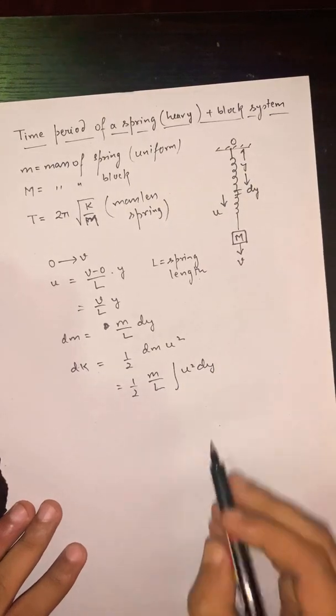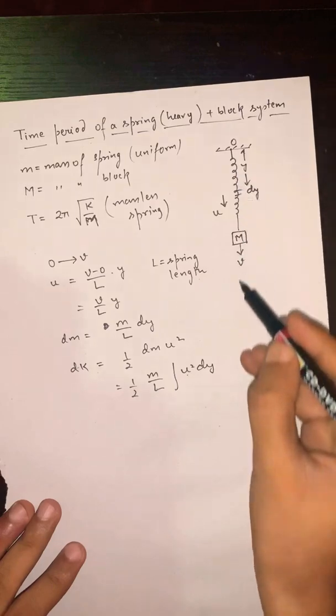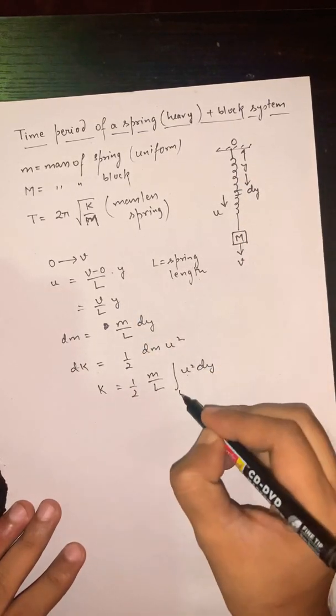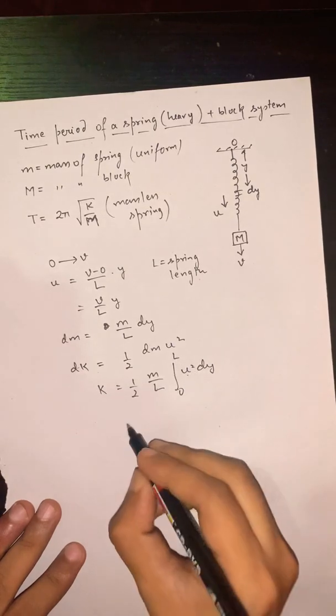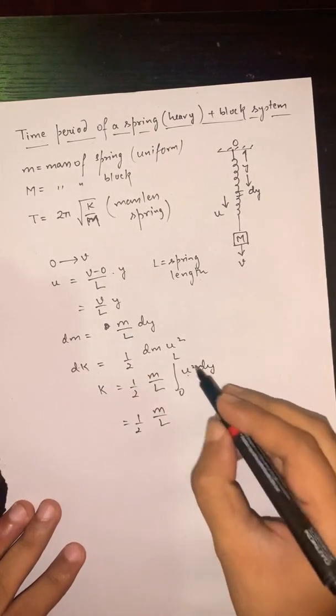We've kept u² inside the integration as u is a function of y. For the whole spring we'll integrate from 0 to L. We'll put the value of u from the equation.